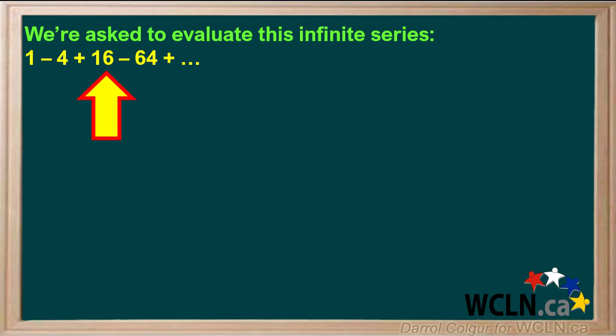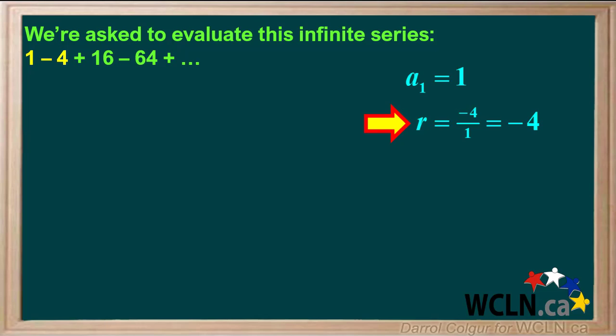We're asked to evaluate this infinite series. This means we need to find its sum. We see that a1 is equal to 1, and r equals negative 4 over 1, which is negative 4.